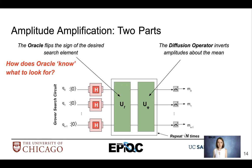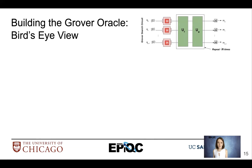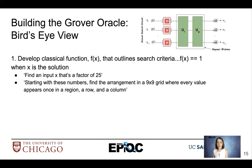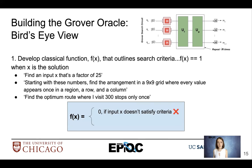There's a lingering question: how does the oracle know what to look for? At a high level, we develop a classical function f(x) that outlines our search criteria. f(x) equals 1 when x is the solution. We outline criteria such as: find an input x that is a factor of 25, find an arrangement of a 9×9 grid satisfying a Sudoku problem, or find the optimum route visiting 300 stops only once. f(x) equals 0 if input x does not satisfy the criteria, and equals 1 if it does.